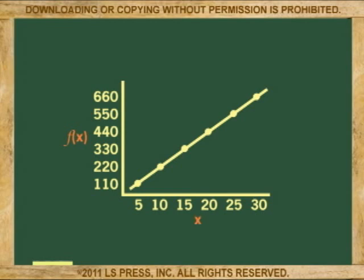We may call the horizontal axis H for hours, and the vertical axis, then, is the function of H. Notice that it is impossible to show two different earnings for the same number of hours. This is what makes it a function.